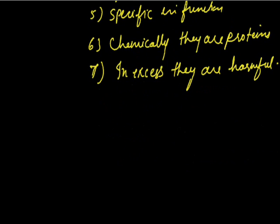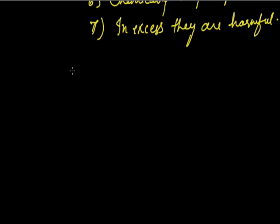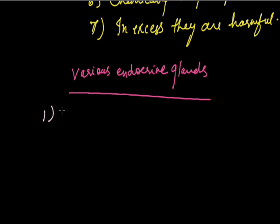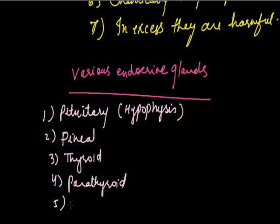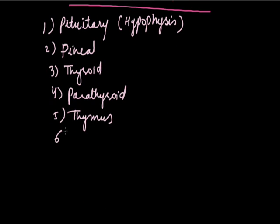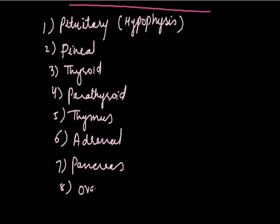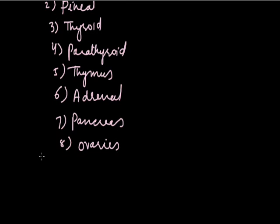Now let us discuss the various types of endocrine glands in the human body. The first is the pituitary gland, also called hypophysis. Second is the pineal gland. Third is the thyroid. Fourth is the parathyroid. Fifth is the thymus gland. Sixth is the adrenal. Seventh is the pancreas. Eighth is the ovaries, which are also a primary sex organ of females. And the ninth is the testes, which are the primary sex organ in males.